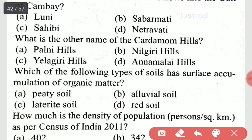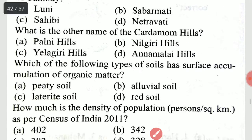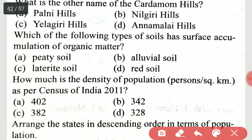What is the other name of the Cardamom Hills? It is option C, Yelagiri Hills — the Cardamom Hills are also known as the Yelagiri Hills. Which type of soil has surface accumulation of organic matter? It is option E, peat soil.